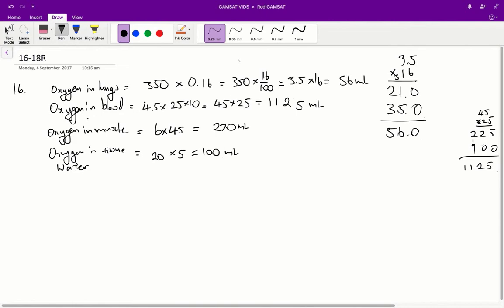So for oxygen in the blood, we have 4.5 liters. And the table has given us the value that of those 4.5 liters, 25 mils per 100 mils of that is oxygen. So to figure out the amount of oxygen in the blood, we've got to do 4.5 times 25 times 10. The reason we've got to tack on the extra 10 is because the volume is in liters, but the amount of oxygen is in per 100 mils. So we've got to scale it up to per liter by adding that times 10.